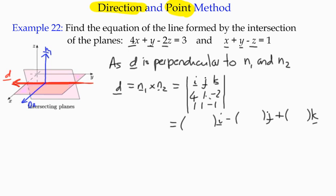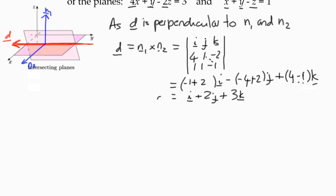Just going through it quickly, I've got -1 minus -2, which becomes -1 plus 2. We've got -4 subtract -2 again, and then we've got 4 subtract 1. Simplifying that gives me 1i, and we've got -2 times -1 plus 2j, and then here I've got 3k. Hopefully that's a familiar method to you. My direction vector for the line is i plus 2j plus 3k, or in other words, 1, 2, 3. That's great. We've got half of the equation of the line.